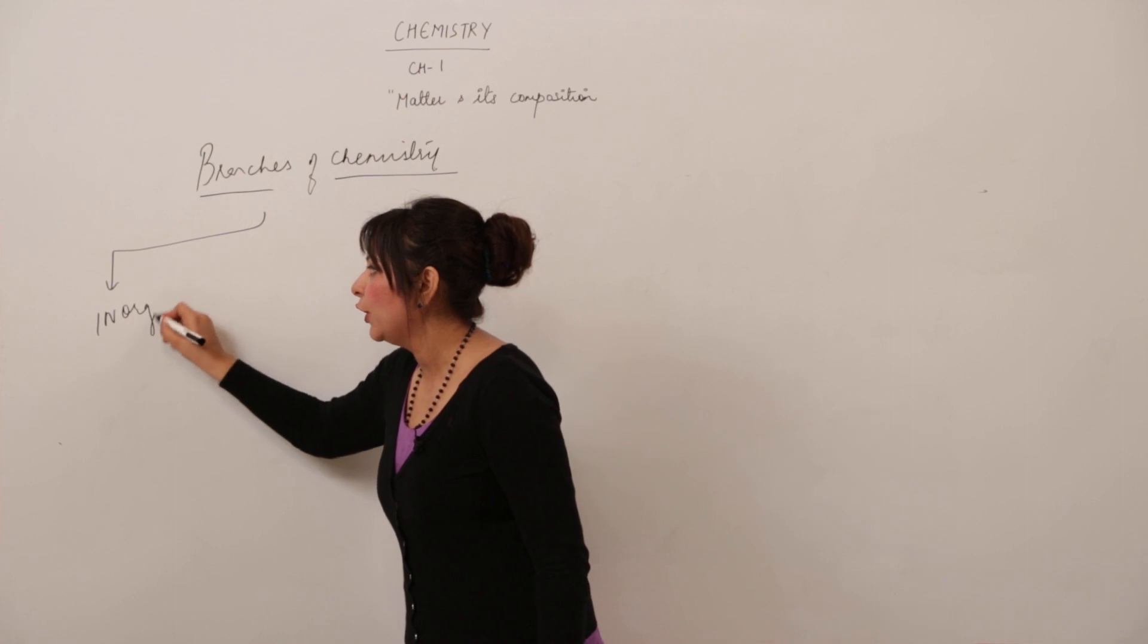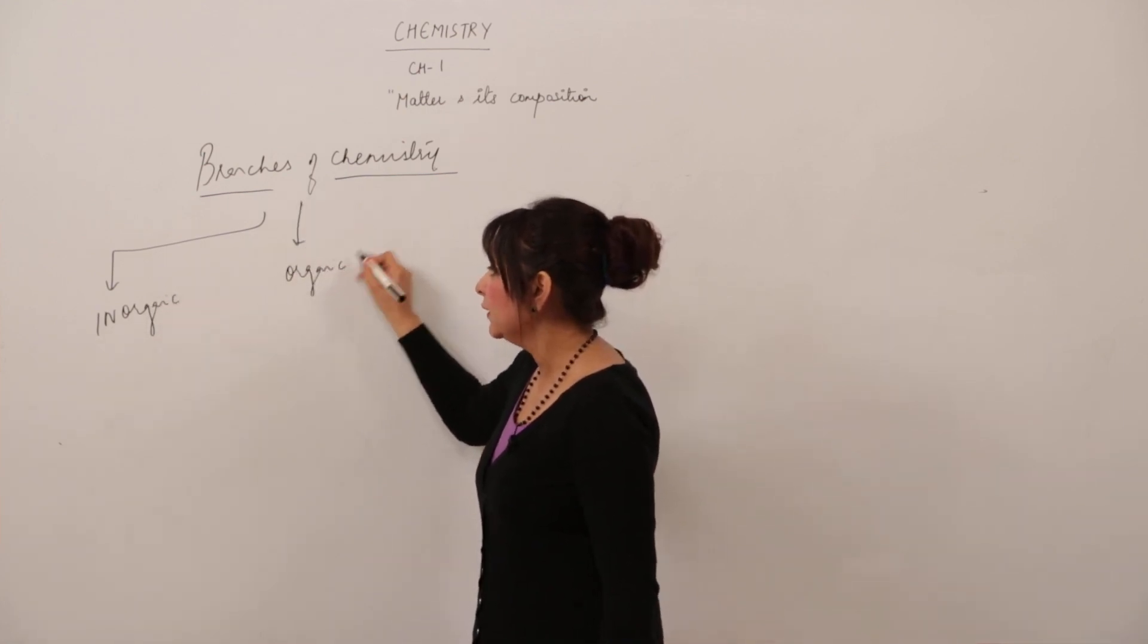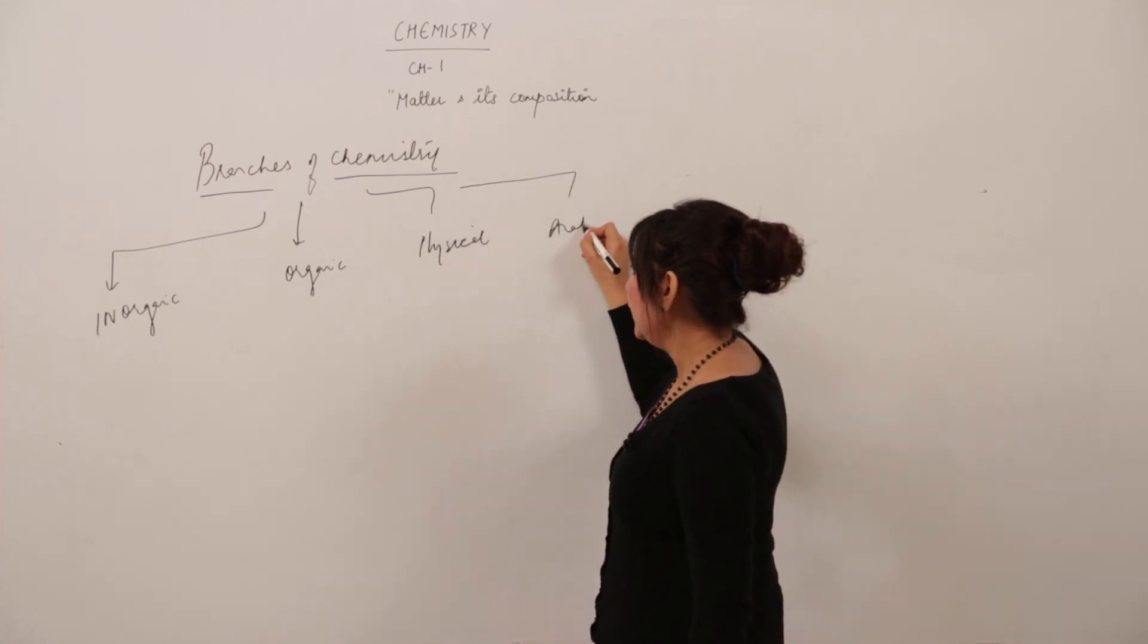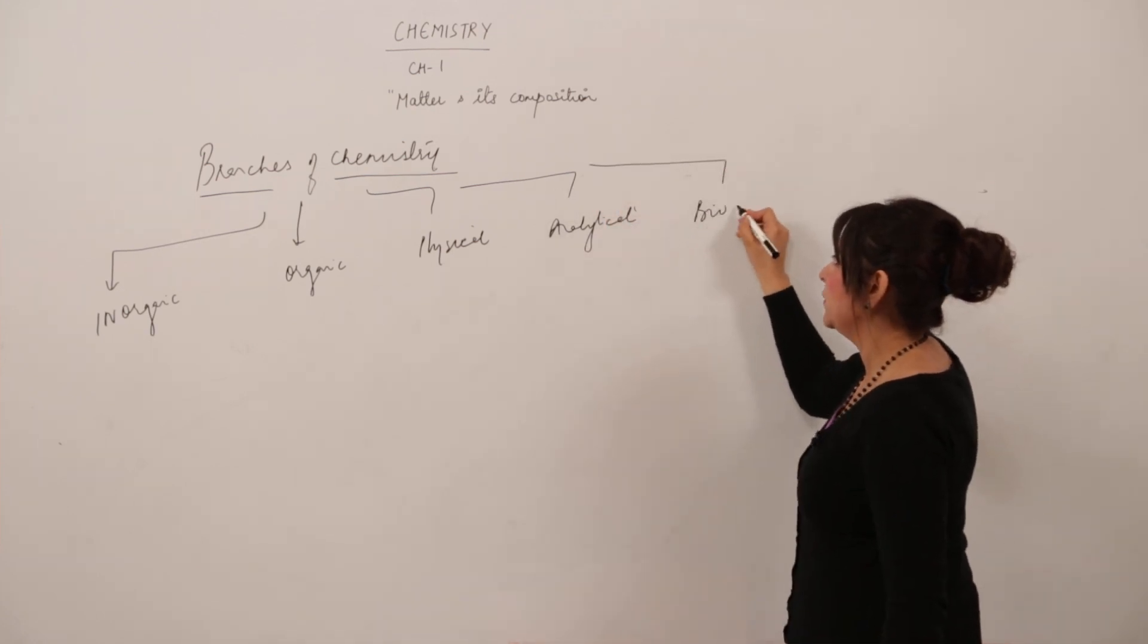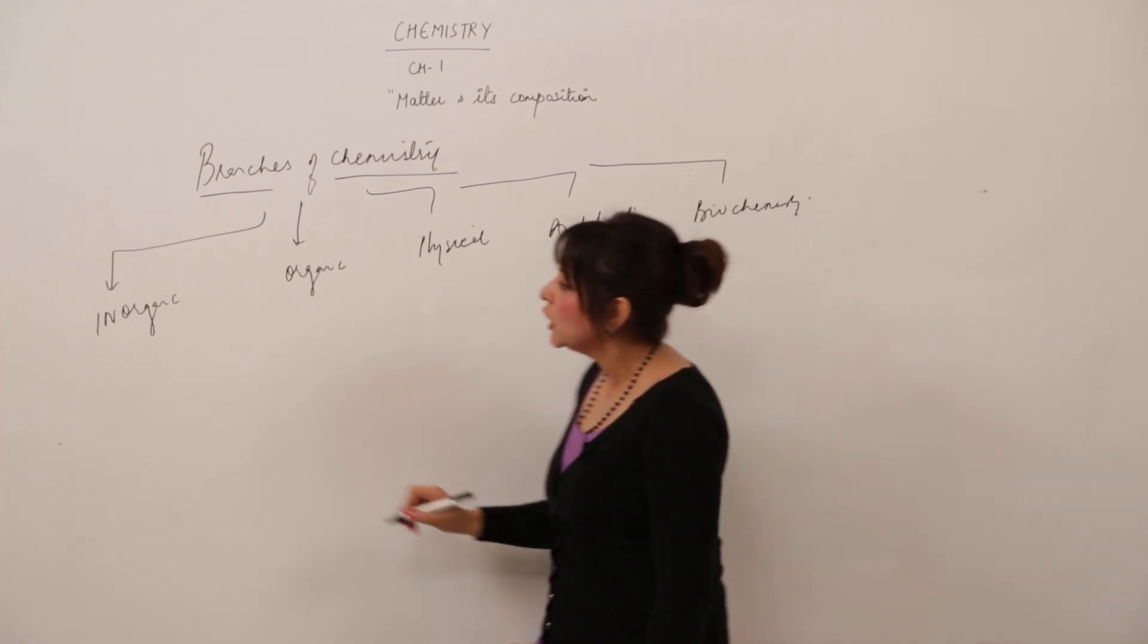Chemistry is divided into inorganic chemistry, organic chemistry, physical chemistry, analytical chemistry, and biochemistry. Now, what are these branches exactly?